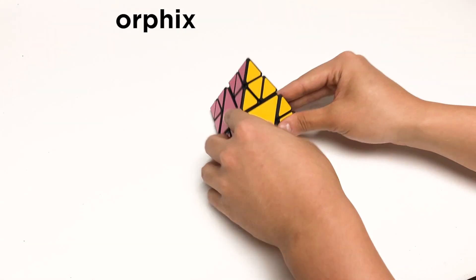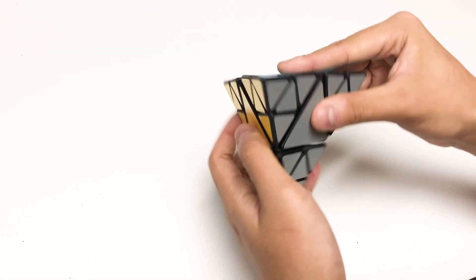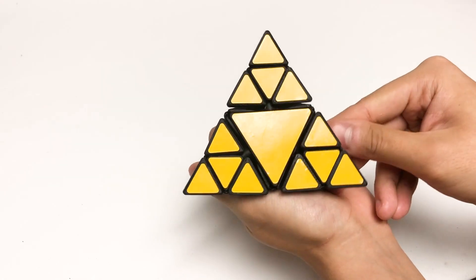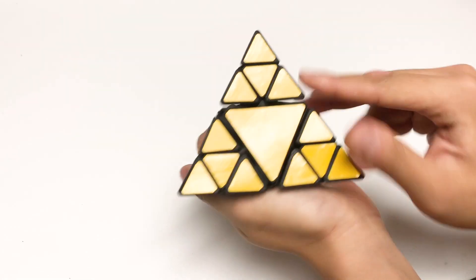This is the fractal morphics. It is a puzzle whose face pattern is based on a second order Sierpinski triangle.